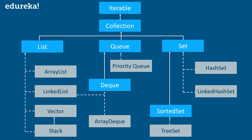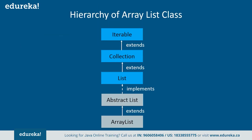Talking about ArrayList, it uses a dynamic array for storing elements. It inherits the AbstractList class and implements the List interface. The List interface then extends the Collection and Iterable interfaces in hierarchical order. So this is about the hierarchy of the ArrayList class.